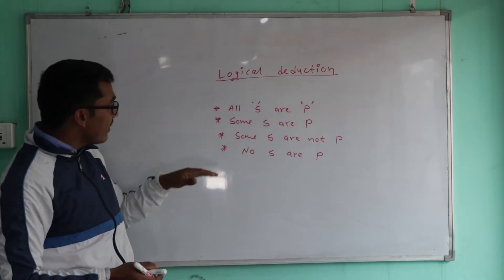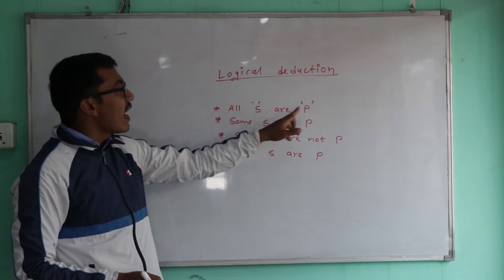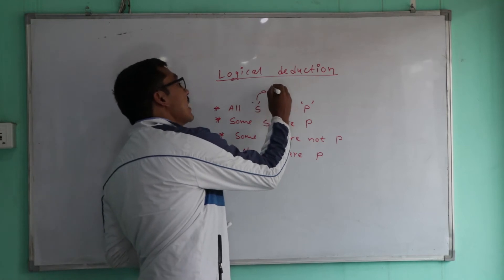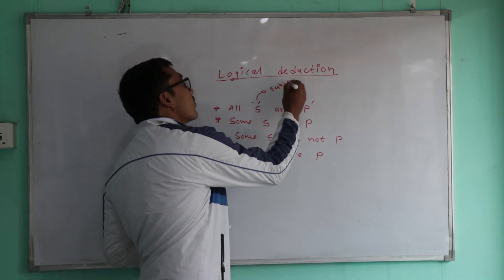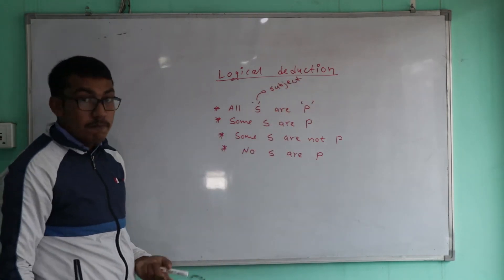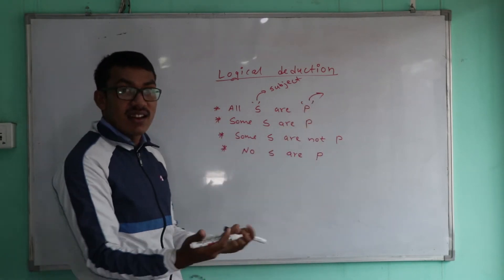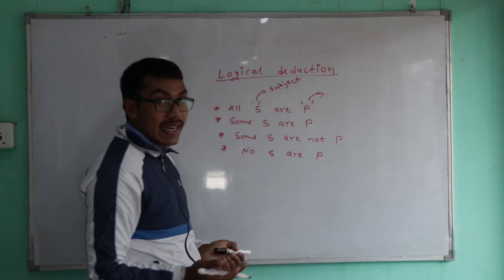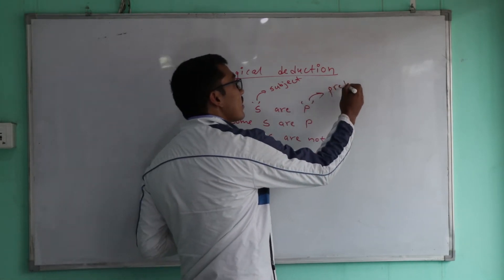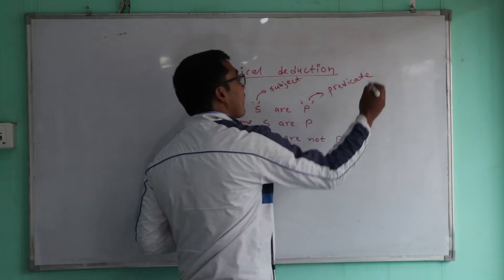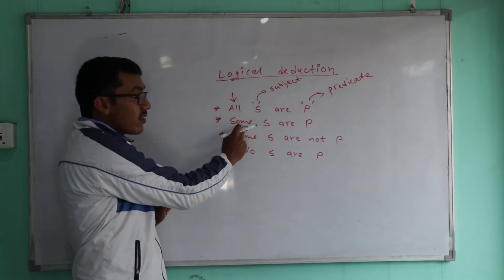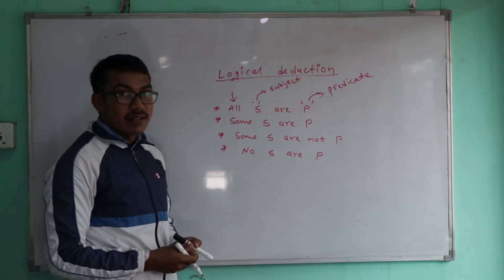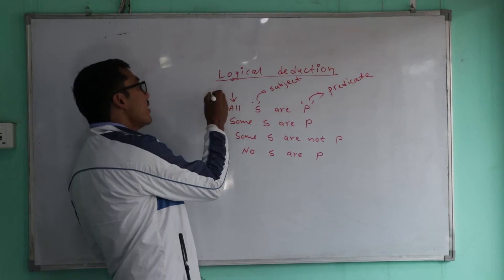For example, 'All men are animals' — here, S is the subject term and P is the predicate term. You can also use a quantity term. In this type of statement, S is distributed as the subject, and P functions as the predicate.